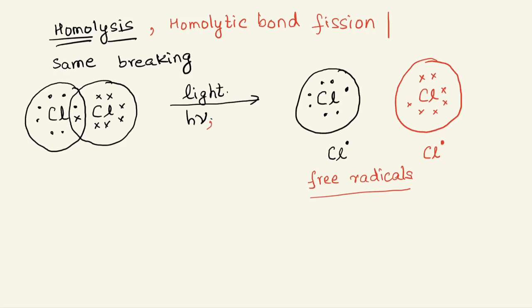One of the hints: when does homolysis take place? It takes place either in the presence of light, or it will involve a lot of heat, or there will be examples where we observe the formation of free radicals in the presence of peroxides. These are some of the hints which lead you to thinking about homolytic bond fission.